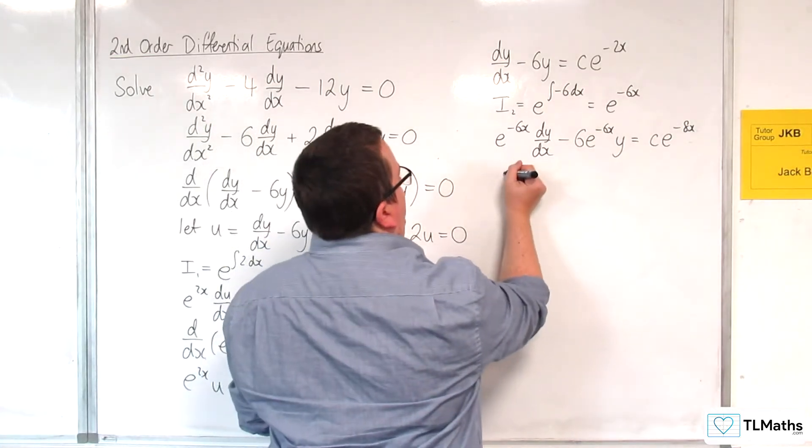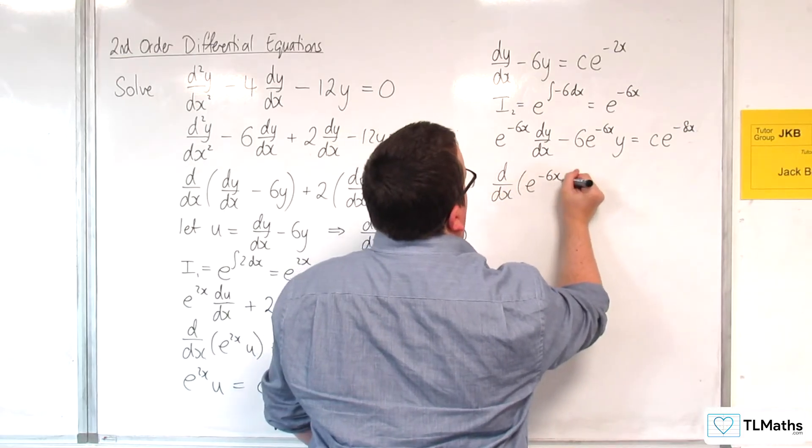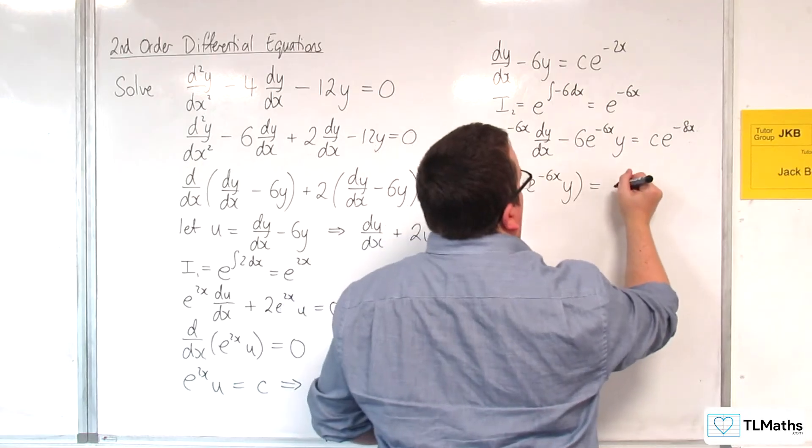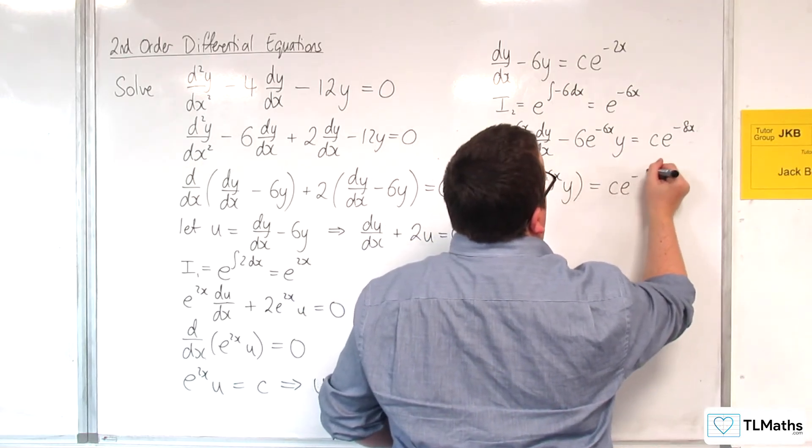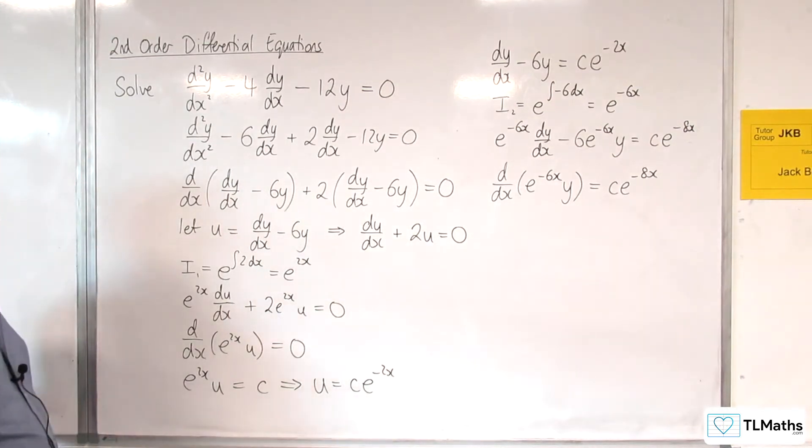The left-hand side is a perfect derivative, d/dx of e^(-6x)y, which is equal to the ce^(-8x).